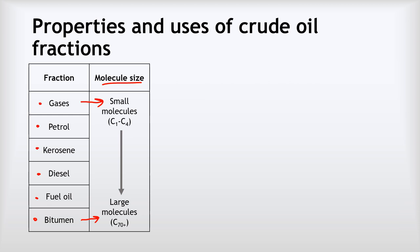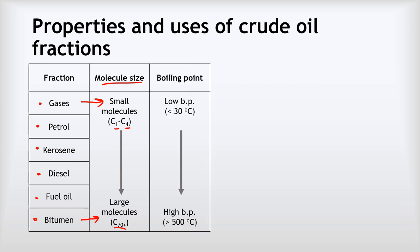To illustrate the difference in size: the molecules of gases only contain between one and four carbons, while the molecules in bitumen contain over 70 carbons. You don't need to know exactly those numbers, but you do need to know the pattern — the gases have the smallest molecules, and as we go all the way down the series through to bitumen, the molecules get larger and larger. Molecule size is important because it determines the boiling points. Small molecules have low boiling points, so the gases have the lowest boiling points — that's why they came out of the top of the fractionating column. As we go further down the series, the boiling point gets higher because the molecules get larger. For example, the gases boil below 30 degrees Celsius, while bitumen won't boil until over 500 degrees Celsius. The numbers aren't important, but the pattern — that boiling point increases because molecule size increases — is the key thing.